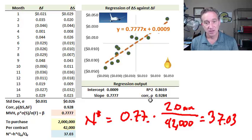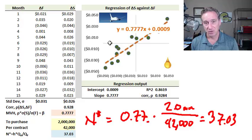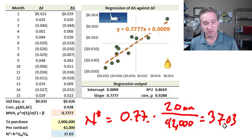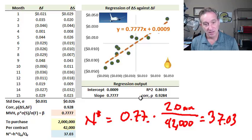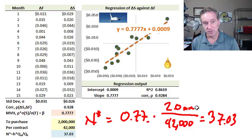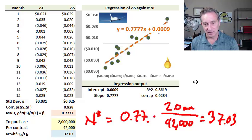The airline has a plan to purchase 2 million gallons in the future — that's their exposure — and so that deserves a long hedge, a long position in the futures contract. This formula tells us the minimum variance hedge is a long position in 37 contracts. If the price of jet fuel goes up, that's going to cost the airline more, but the long position in the futures contract will produce a gain, which will offset and help minimize their cost.